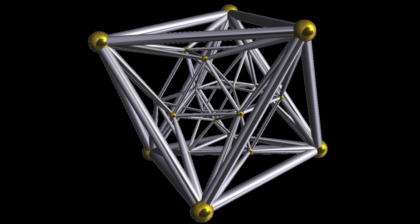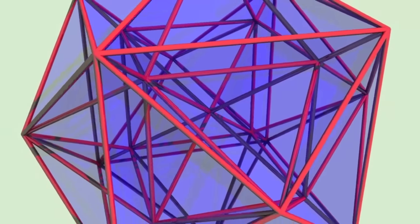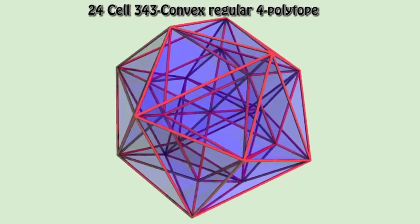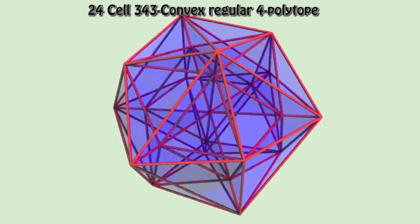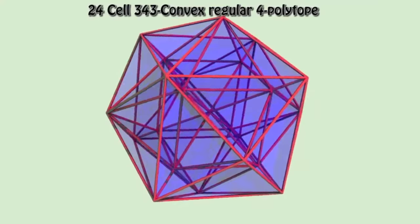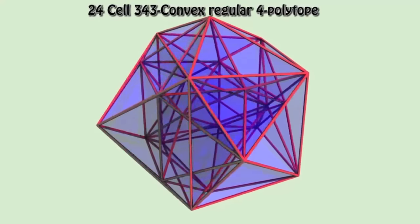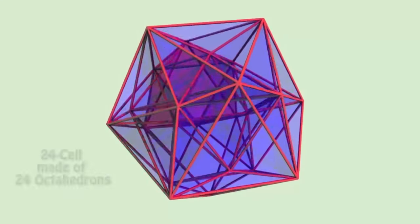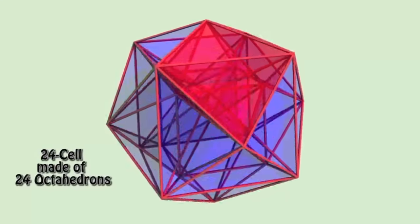The 24-cell is self-dual, meaning its 24 cell faces map exactly onto its own 24 vertex corners, and it embeds itself within itself. Thus the 24-cell is truly a four-dimensional hypershape in the sense of being an object nested within itself, the only difference between the interior and exterior of which is measured as a duration in the fourth dimension — over time.